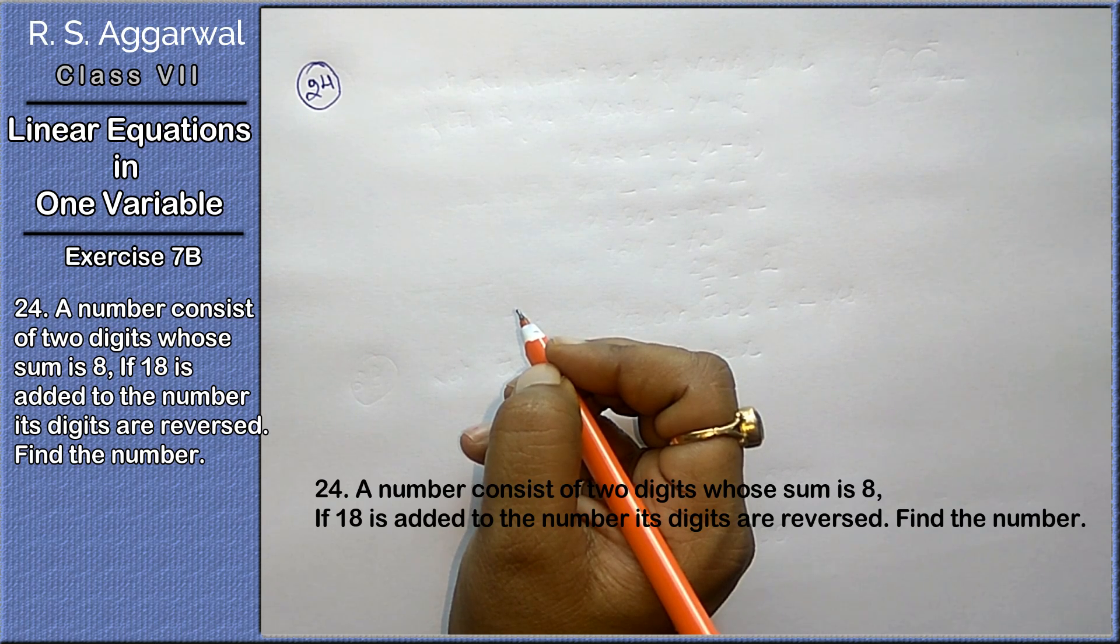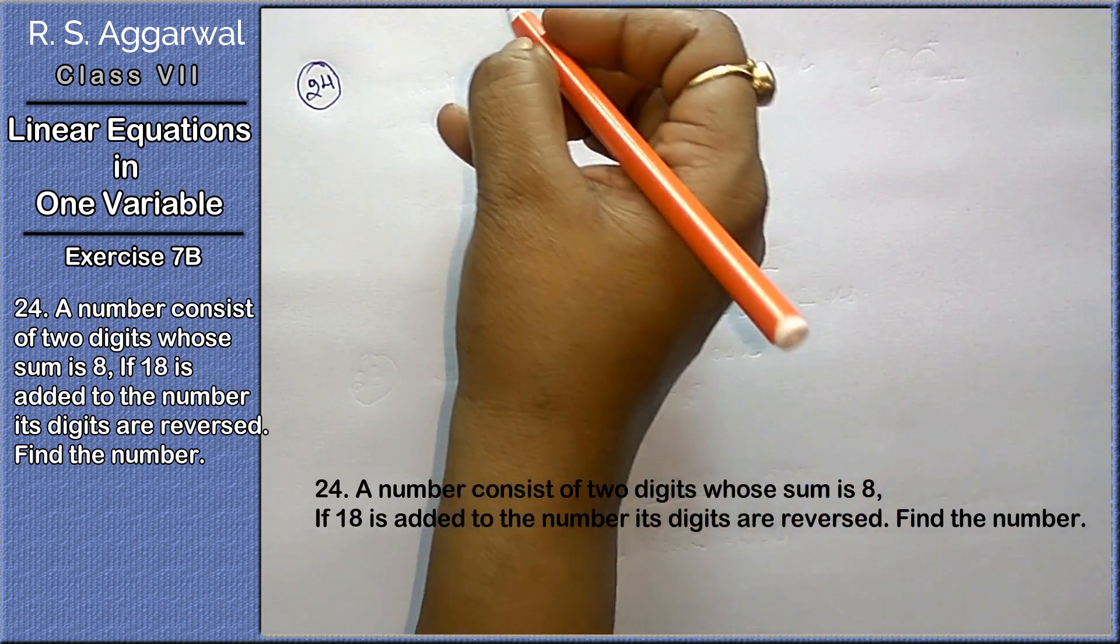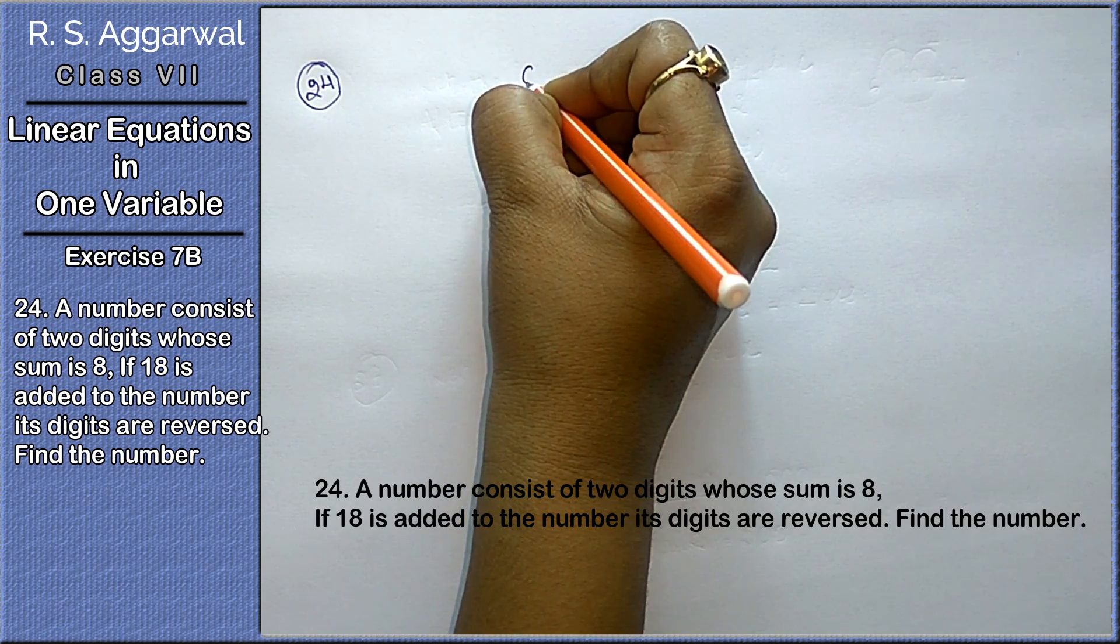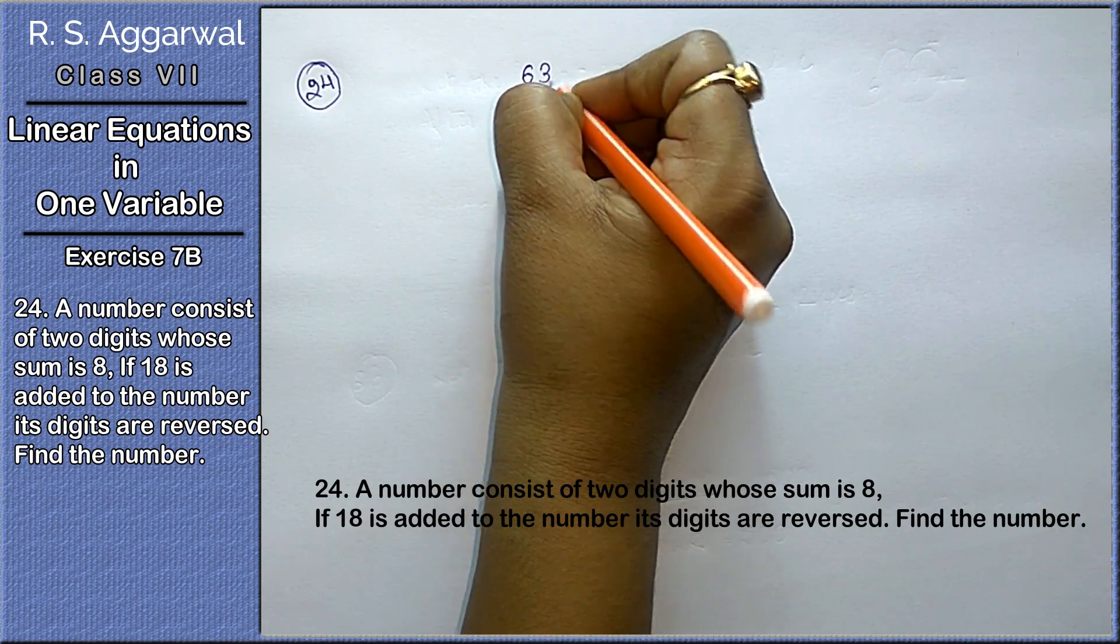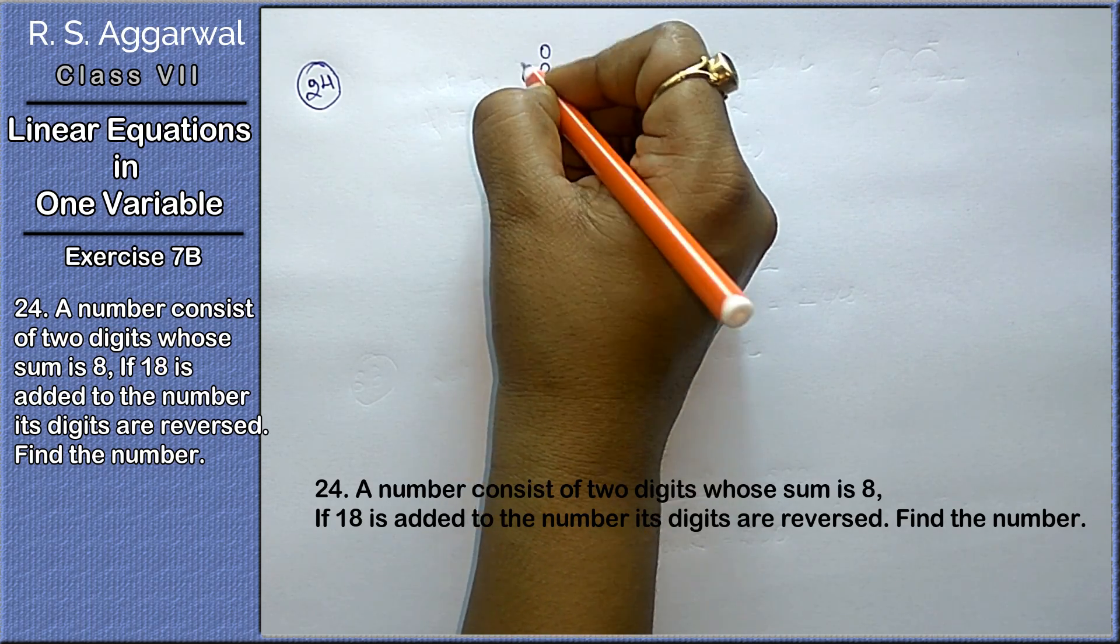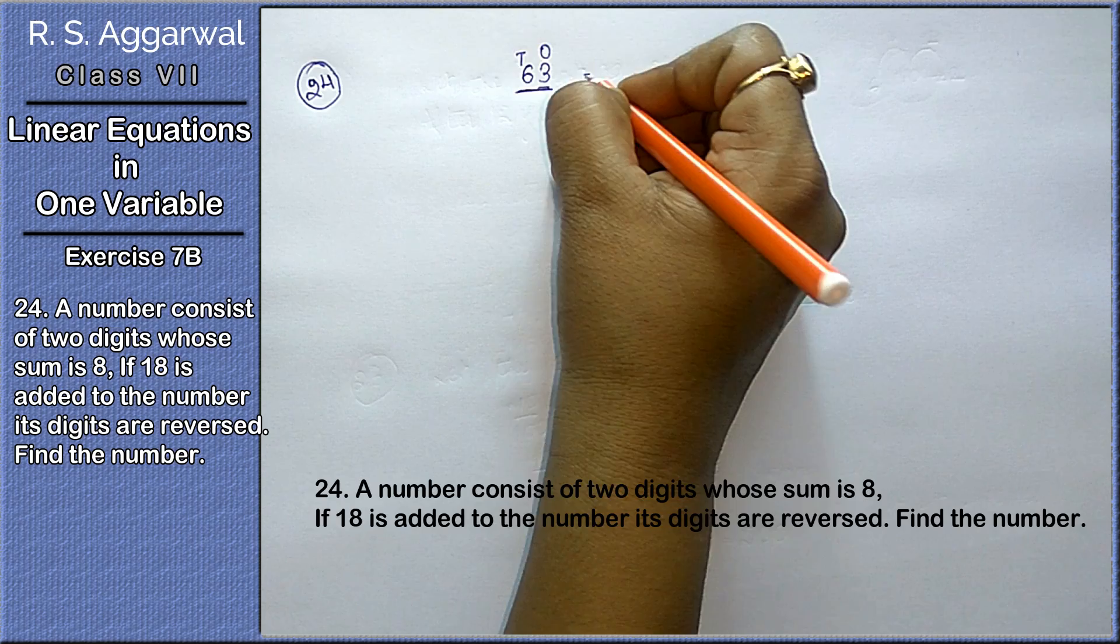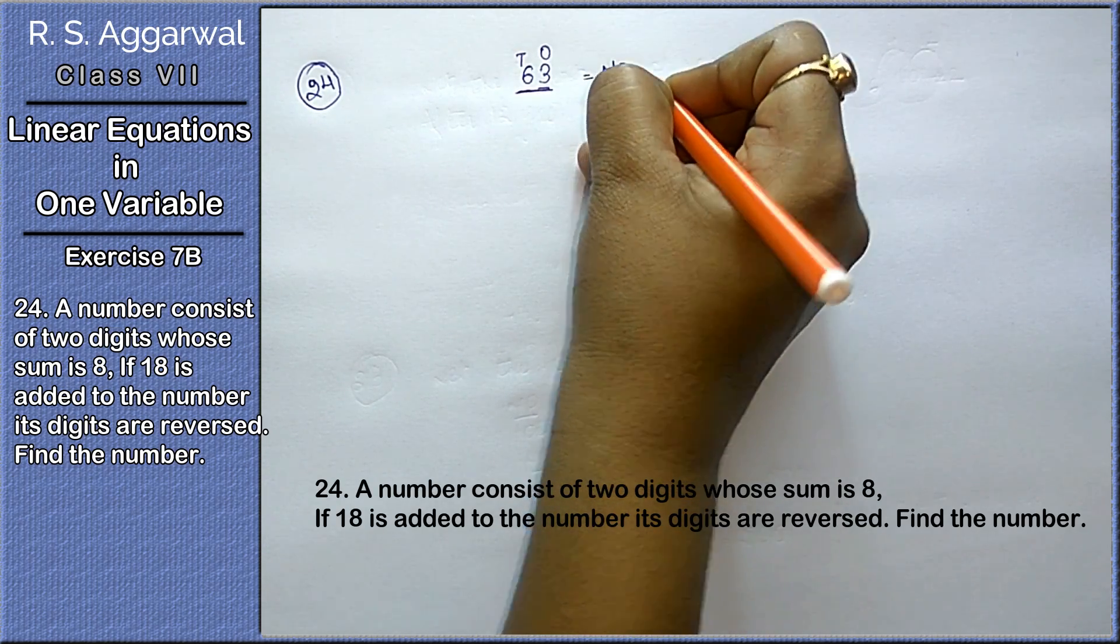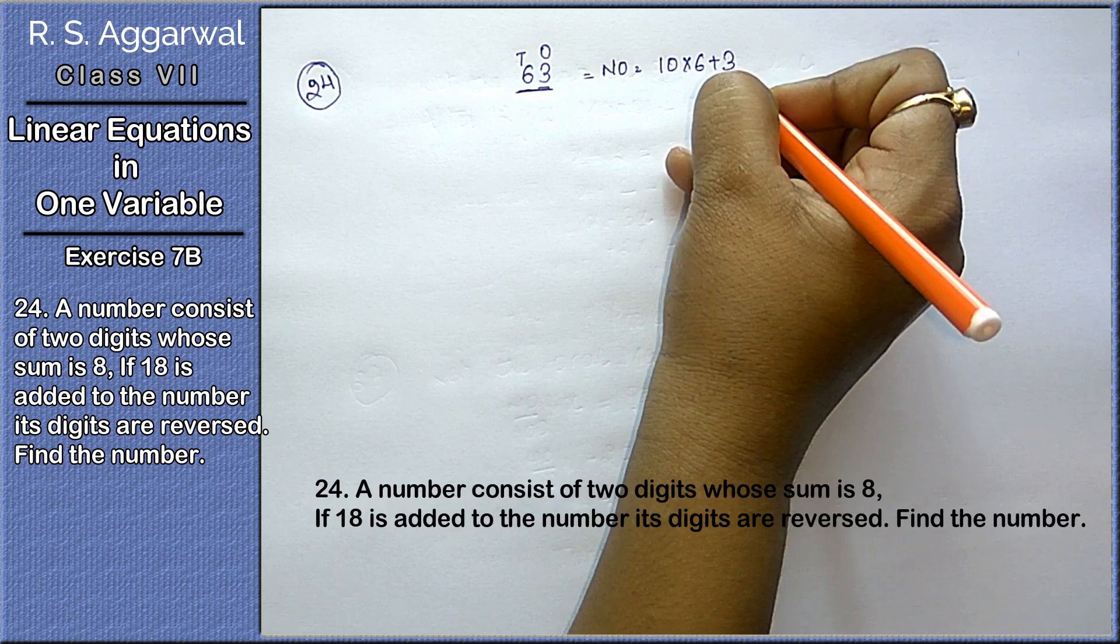Question number 24 is: a number consists of two digits whose sum is eight. Friends, for a two-digit number we will know that it is 63, so this is one's place and this is ten's place.